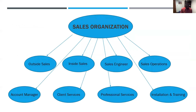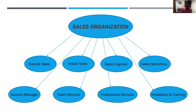Now, specifically in a sales organization, I like to think of the structure as having eight types of roles available. This is more for a tech company, but it can be applied to other industries as well. The eight roles are: outside sales, inside sales, sales engineering, sales ops, account management, client services, professional services, and installation and training. In further slides, I'll outline deeper what each one means and what it looks like.